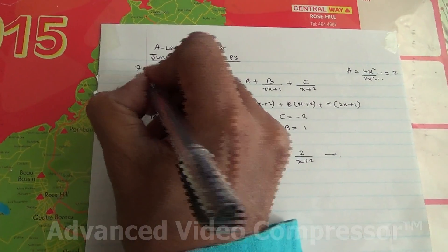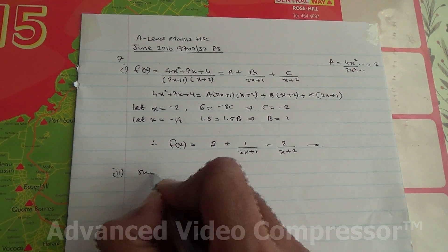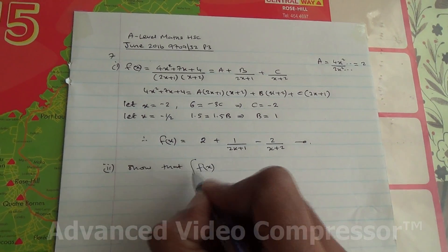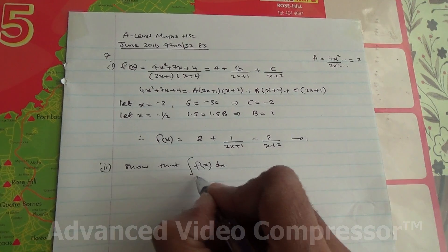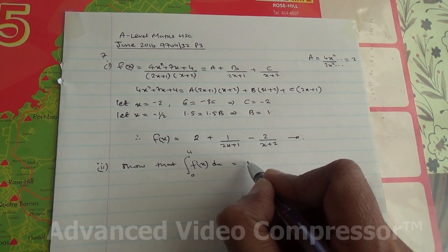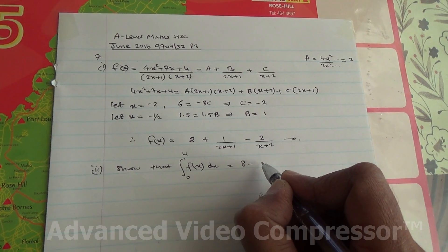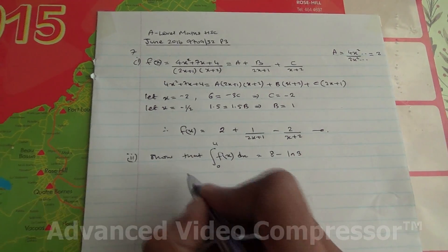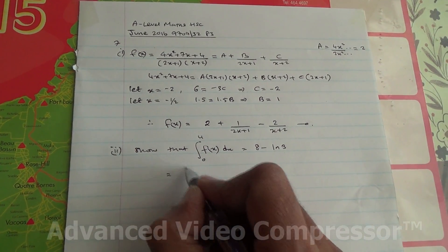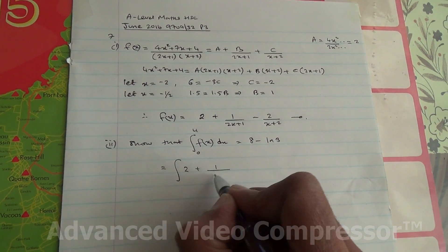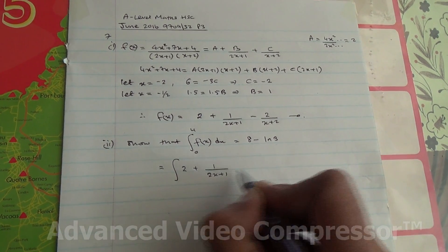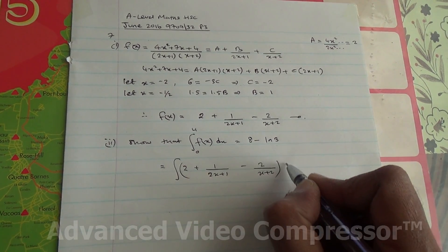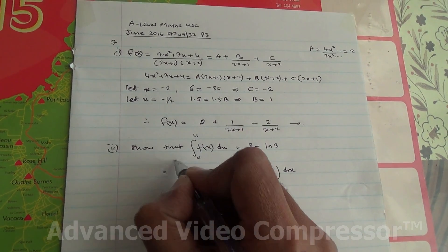Second part. We need to show that the integral of f(x) dx with limits from 0 to 4 is the same as 8 minus ln 3. Okay, so we're going to integrate this whole expression here. Therefore, I'm going to say the integral of 2 plus 1 over (2x plus 1) minus 2 over (x plus 2) dx, and of course, the limits 0 to 4.